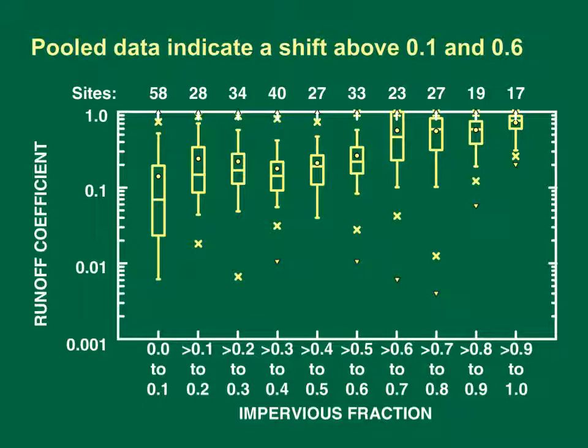These runoff coefficients are grouped by impervious fraction intervals. The runoff coefficients are shown on a log scale on the vertical axis, and sites are grouped by impervious fraction along the horizontal axis. Each box plot shows the runoff coefficients for all sites in the impervious fraction category. The box covers the interquartile range from the 25th to the 75th percentile. The horizontal line within the box is the median, and the open circle is the average value. The whiskers extend from each end of the box to the 5th and 95th percentiles. The X symbols are the 1st and 99th percentile values, and the triangle symbols are the minimum and maximum values.